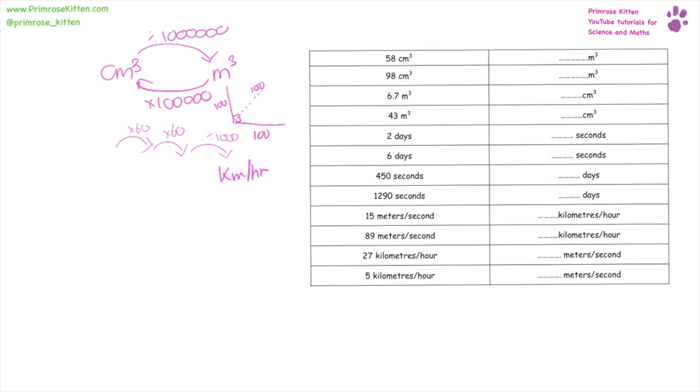To go from kilometers per hour into meters per second, we need to do that in reverse. So times by 1,000, divide by 60, and divide by 60.